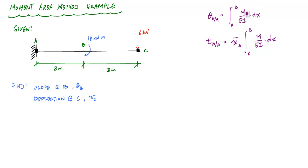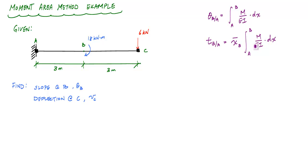The first theorem shows that the change in slope between two points is equal to the area under the curvature diagram. The second moment area theorem shows that the vertical deflection to point B from the tangent line at A is the first moment of area of the curvature diagram. All right, let's go ahead and get to it.